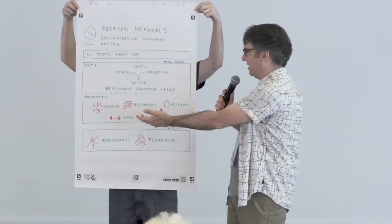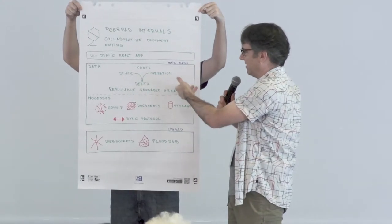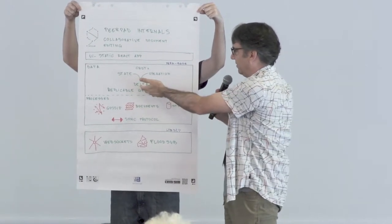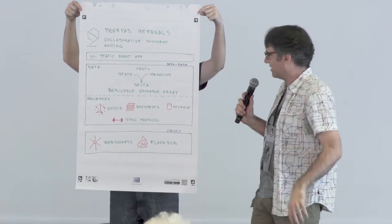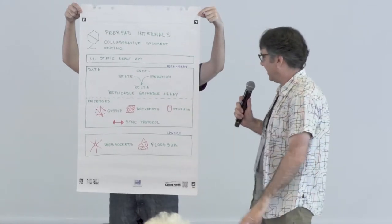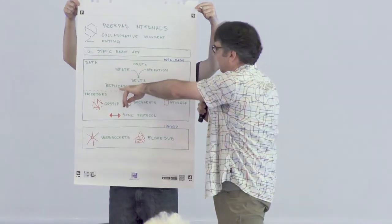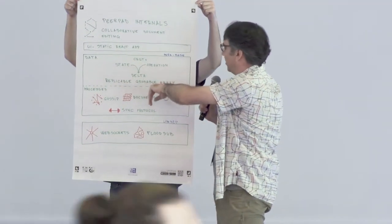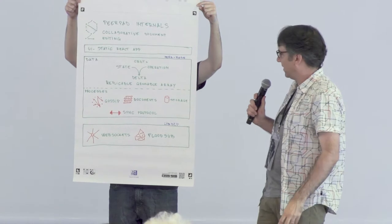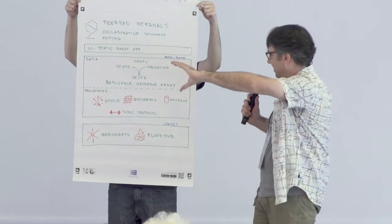There's different types of CRDTs, state, operation-based CRDTs. It uses a hybrid called Delta CRDTs. Really interesting paper. And the text is actually stored in a subtype called a replicable growable array. That's the data inside PeerBase.